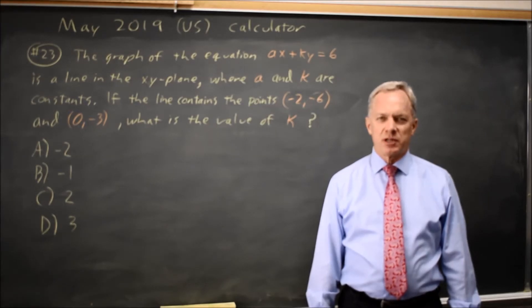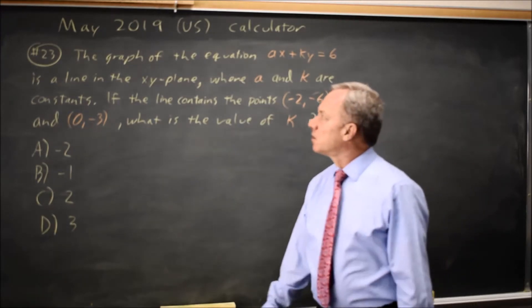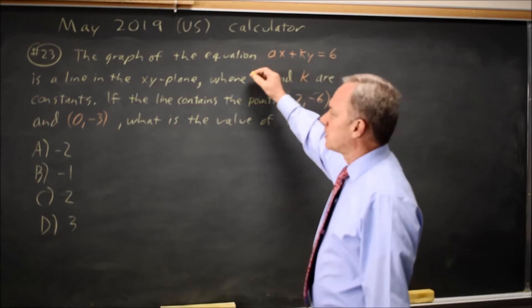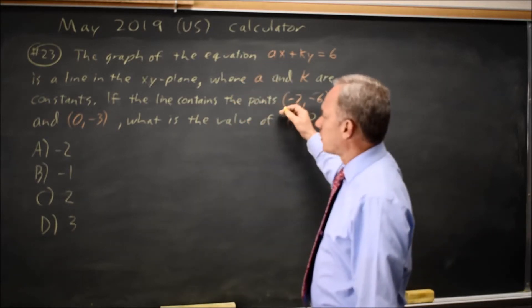This is calculator question number 23. College Board gives us an equation, Ax plus Ky equals 6, and two points on the graph of that line.